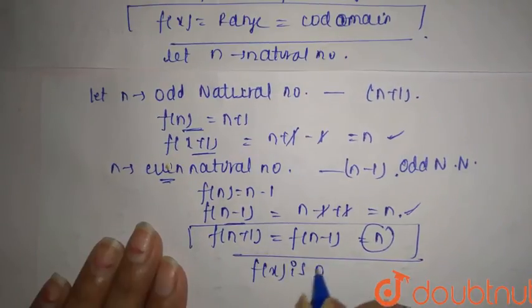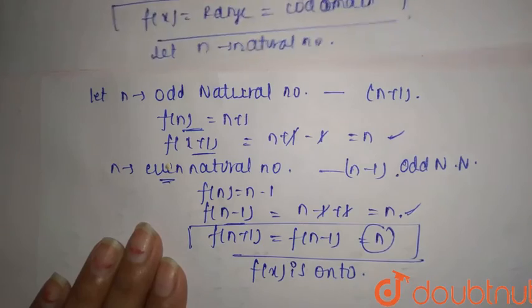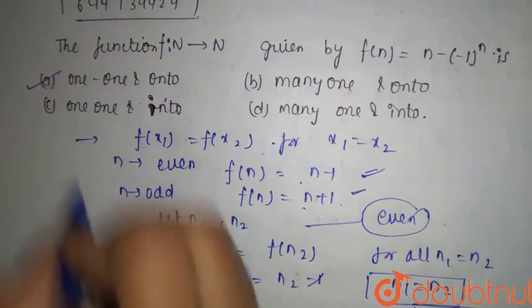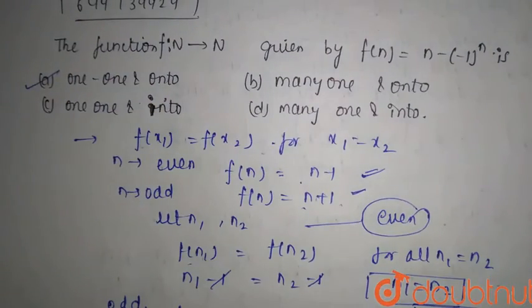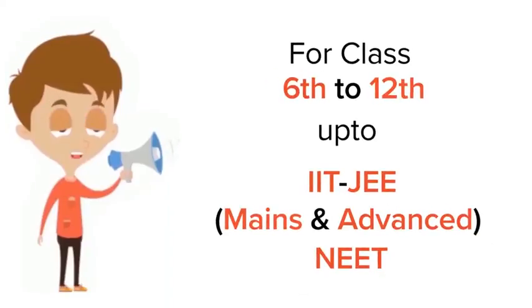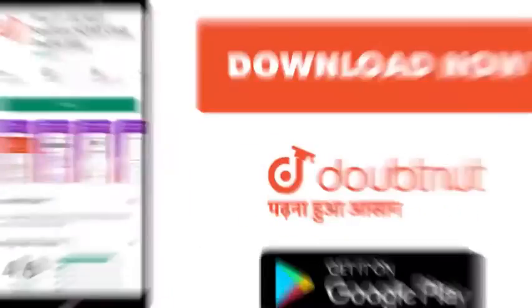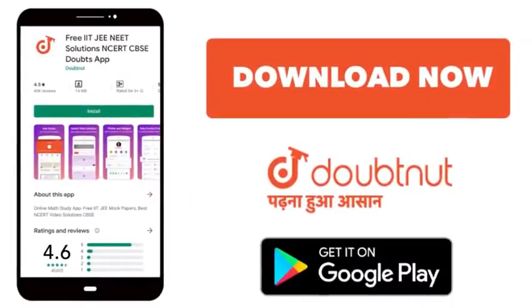So f(x) is onto. Therefore, f is both one-one and onto — option number A is correct. Thank you. For class 6 to 12, IIT JEE, and NEET level, trusted by more than 5 crore students — download DoubtNet app today.